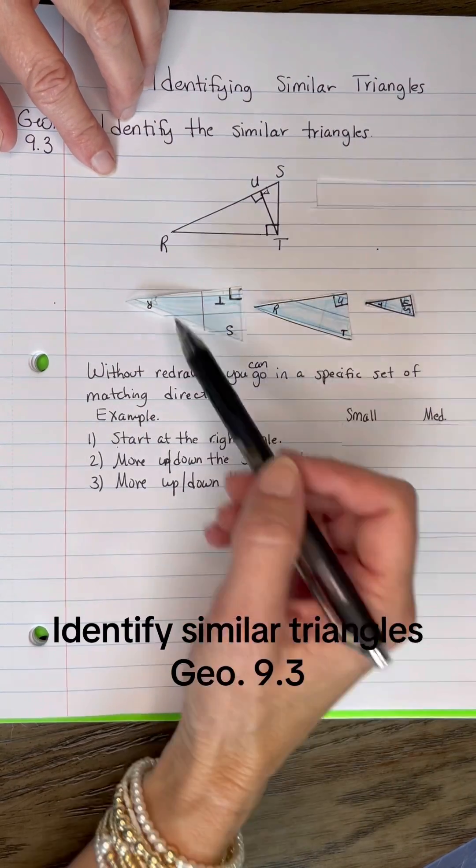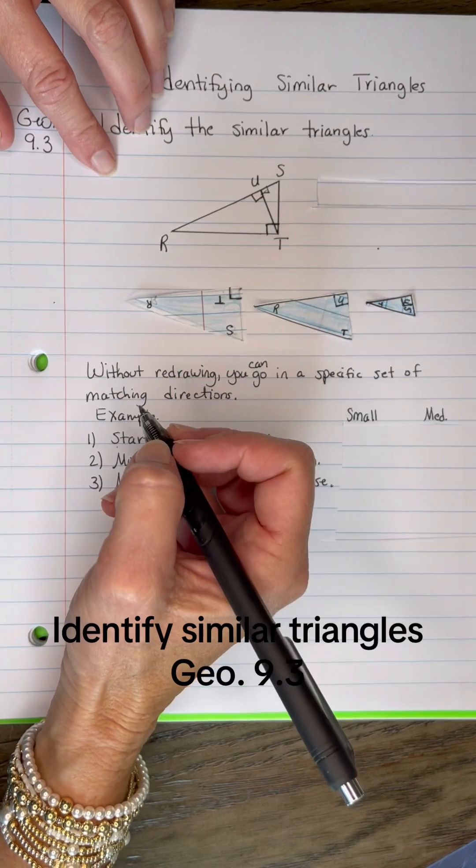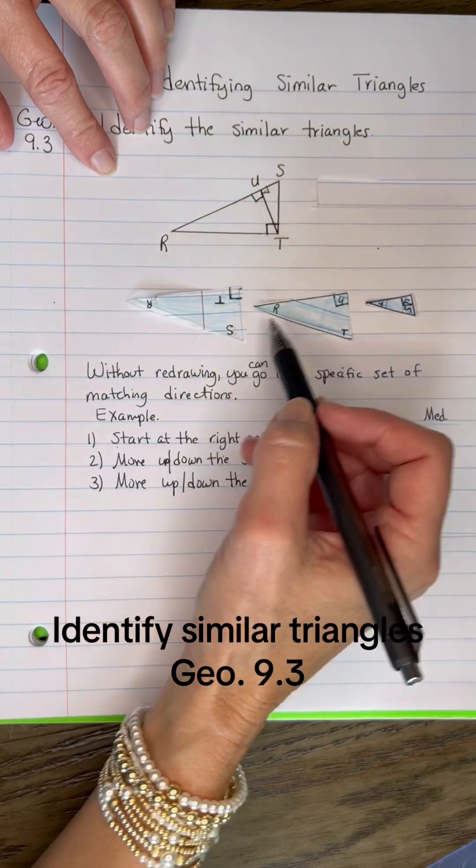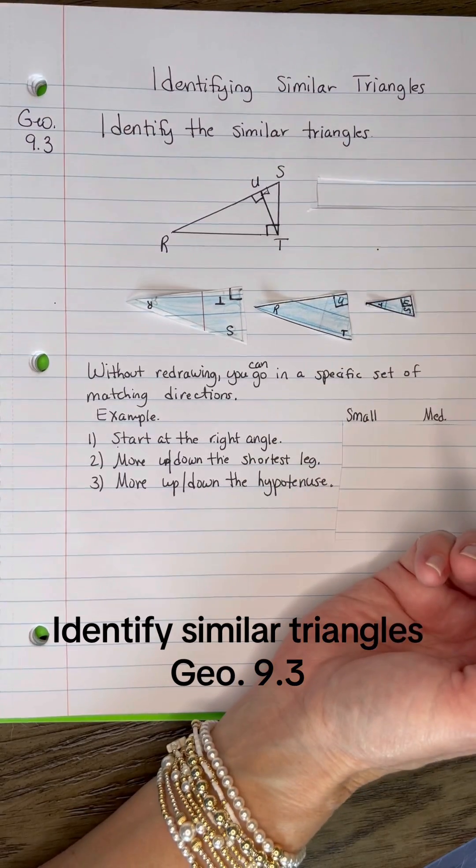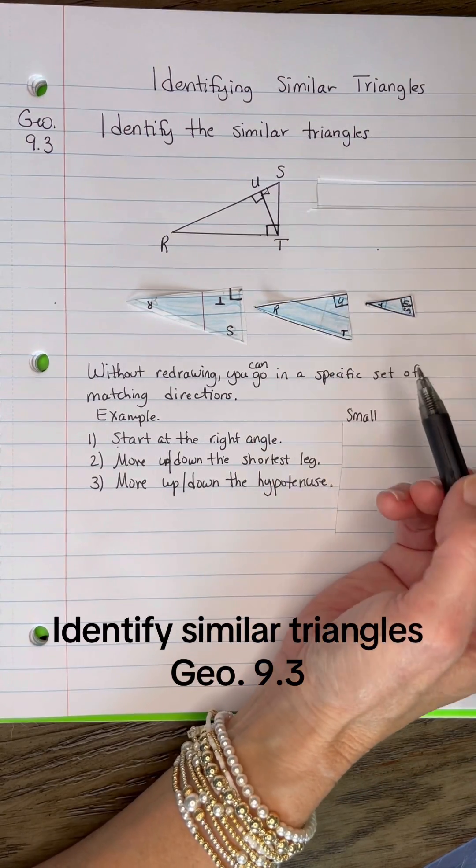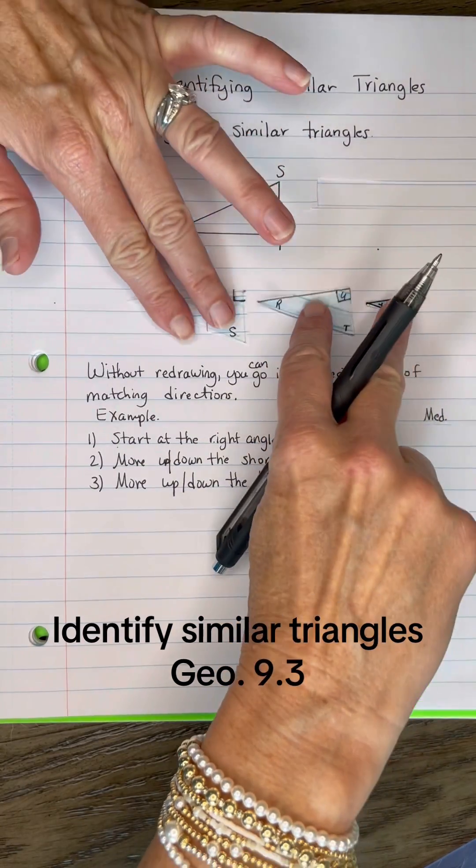And then you can make your similarity statement from this, like RTS, RUT, and TUS would be similar. Now a lot of students won't take the time to draw those out again and orient them the same way. I was going to show you how it is.